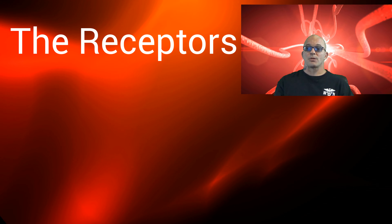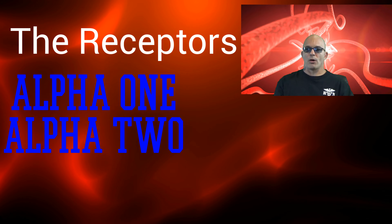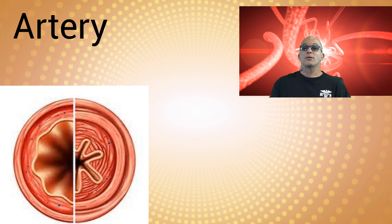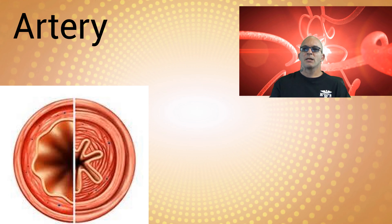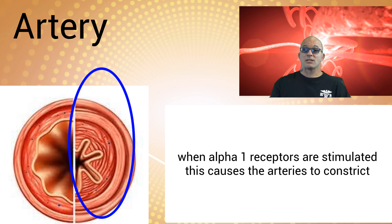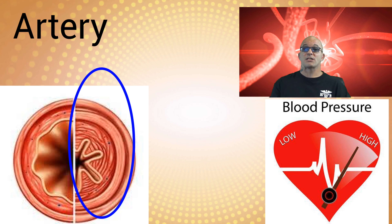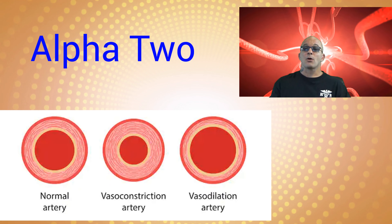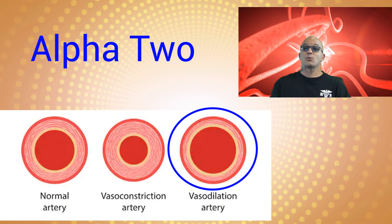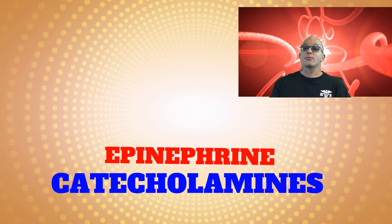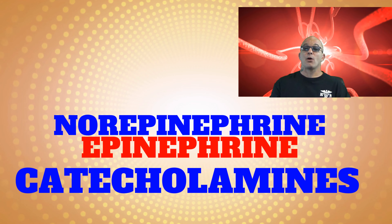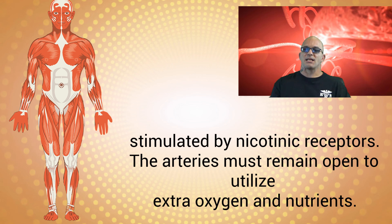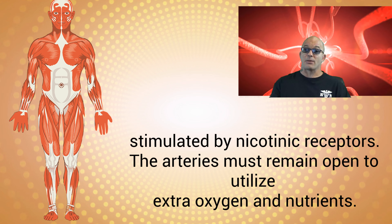We will now discuss the receptors, which include alpha-1, alpha-2, beta-1, and beta-2. Alpha-1 receptors are located in the arteries, and when alpha-1 receptors are stimulated, this causes the arteries to constrict, which causes blood pressure to increase. Alpha-2 receptor stimulation causes vasodilation, which lowers blood pressure. Alpha-2 receptors are stimulated by catecholamines — both epinephrine and norepinephrine — except in the skeletal muscles, which are stimulated by nicotinic receptors.